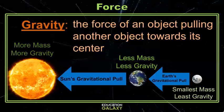The moon, Earth, and the sun all have gravity, but since the sun is the largest, it has the most or strongest gravity. The opposite is true for the moon.